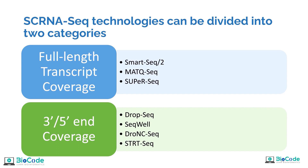The two broad categories are full-length transcript coverage and three-prime or five-prime end coverage. In bulk RNA sequencing, the full-length transcript — your entire RNA — is sequenced. In single cell RNA sequencing, you have the ability to do full-length transcripts using technologies such as SMART-seq, SMART-seq2, and SUPeR-seq. However, there is a newer methodology — three-prime or five-prime end coverage — that only sequences the three-prime or five-prime end, using technologies such as Drop-seq, 10x Genomics, and others, which we will discuss further.